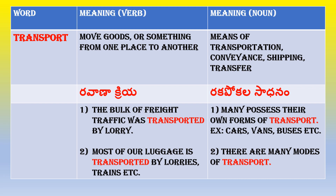How to use it as a noun — let us see two examples. First: many people possess their own forms of transport — some may have cars, vans, buses, etc. Second example: there are many modes of transport — cars, vans, buses, lorries, trains, airplanes, and your cycle is also a means of transport.